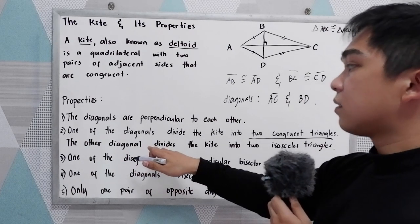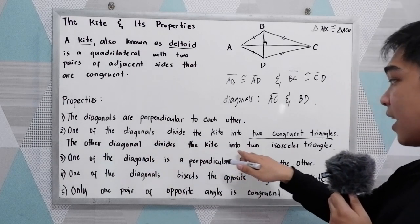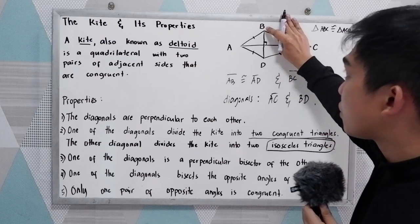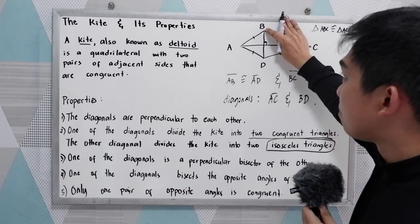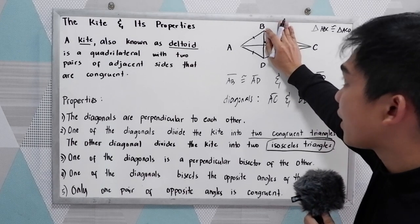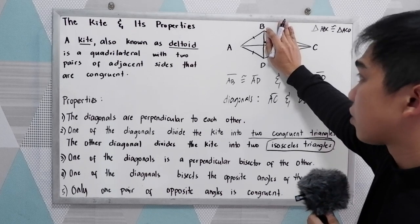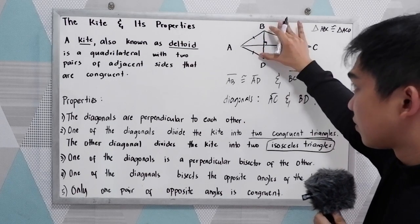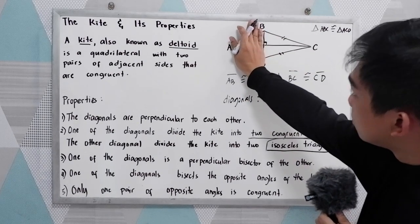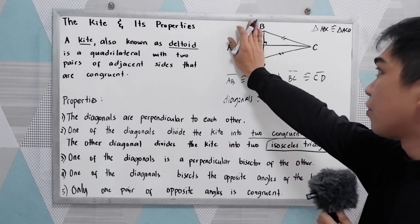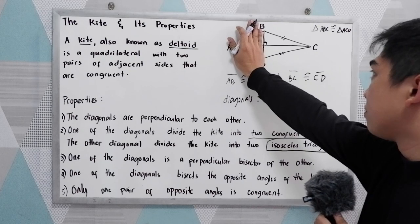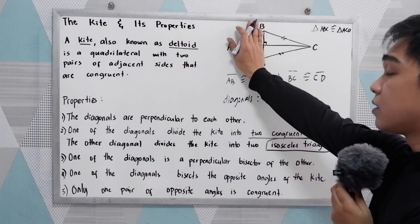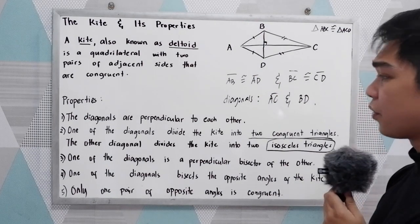While the other diagonal divides the kite into two isosceles triangles. If we use diagonal BD, each resulting triangle is an isosceles triangle — for example, triangle BCD — where the legs are equal or congruent.